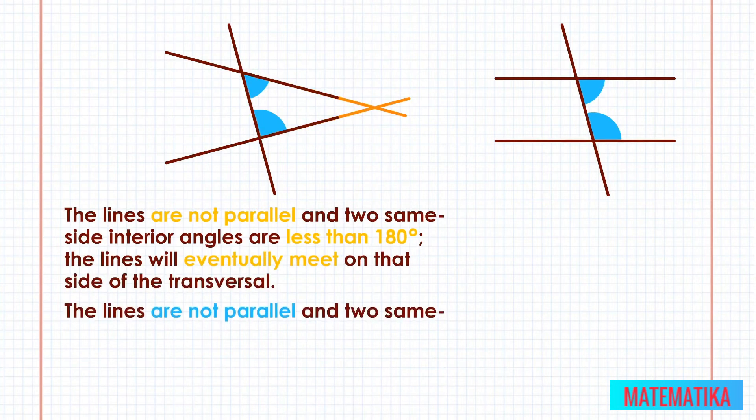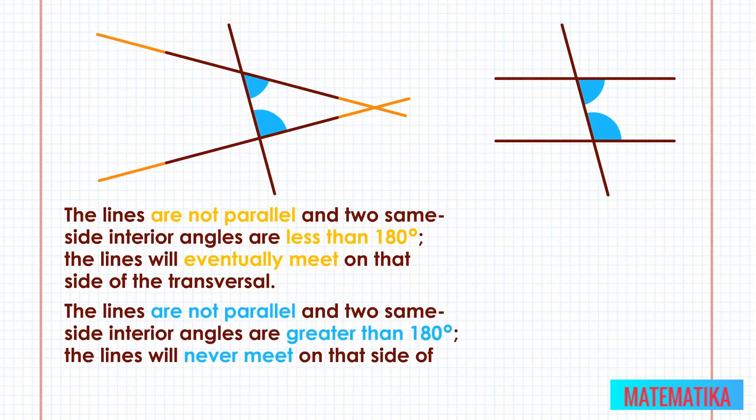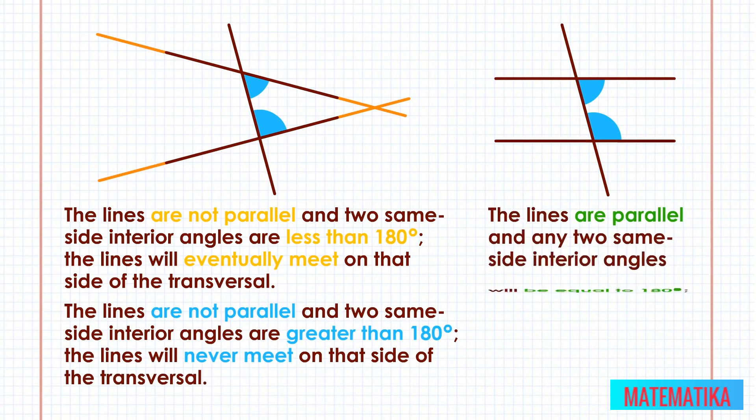The lines are not parallel and two same side interior angles are greater than 180 degrees; the lines will never meet on that side of the transversal. The lines are parallel and any two same side interior angles will be equal to 180 degrees; the lines will never meet.